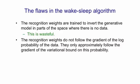The serious problem with this algorithm is that the recognition weights not only don't follow the gradient of the log probability of the data, they don't even follow the gradient of the variational bound on this probability. And because they're not following the right gradient, we get incorrect mode averaging, which I'll explain on the next slide.